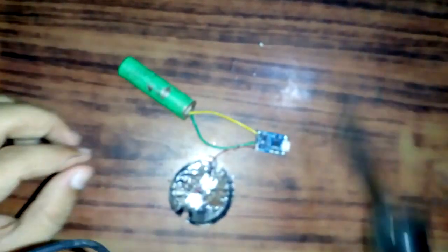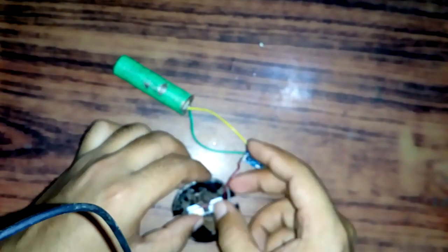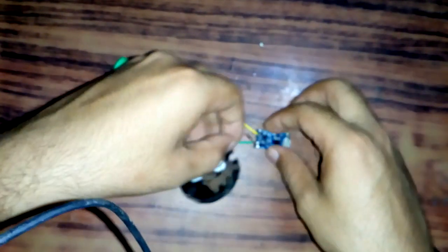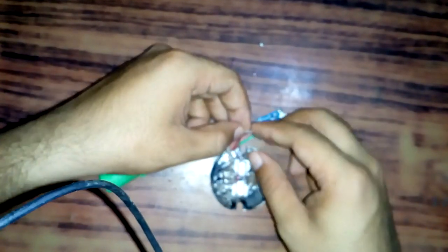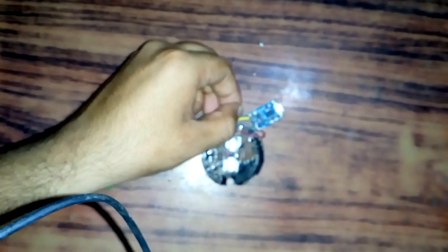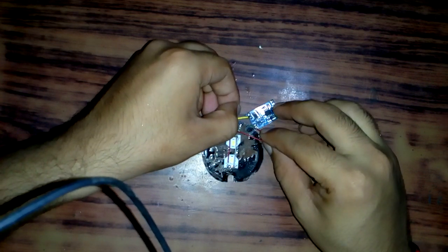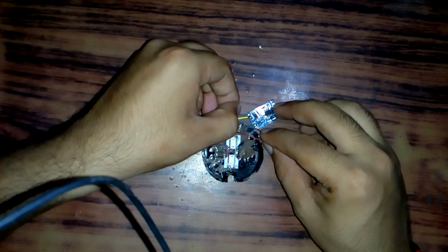I will show you by just connecting the negative terminal, not soldering it. You can see the LEDs are glowing as I connect the wire to the negative terminal, the out minus terminal.